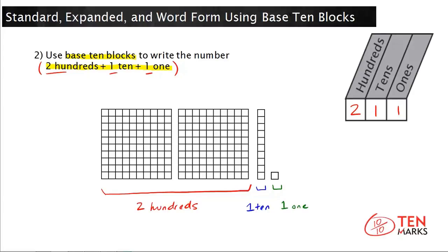Here is the model for two hundred eleven. Notice that the model has two hundreds, which is exactly what you had in the expanded form, and it's what you have in the place value table. It has one ten, which corresponds to the one ten here, and also the one ten in the expanded form. And lastly, there is one one, which is what you expect to find.